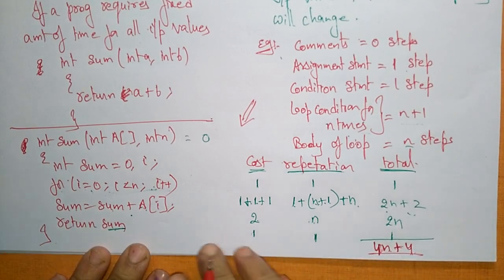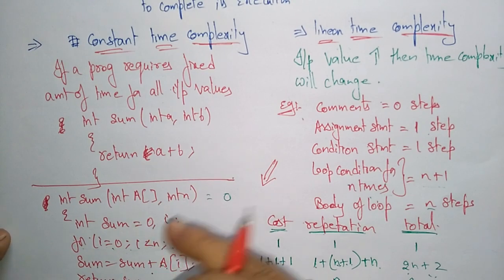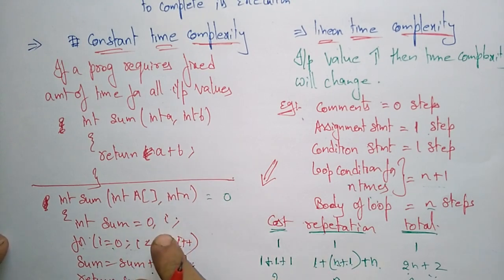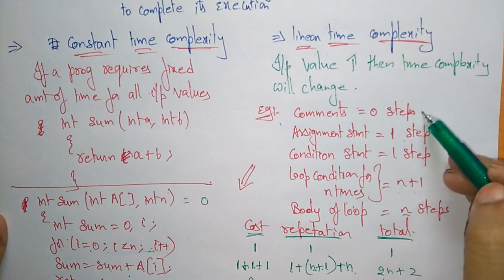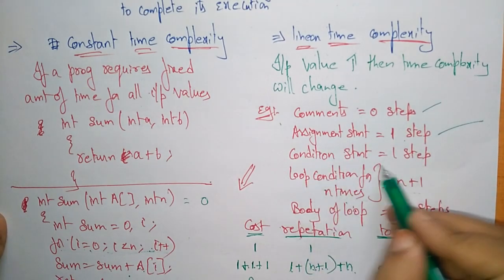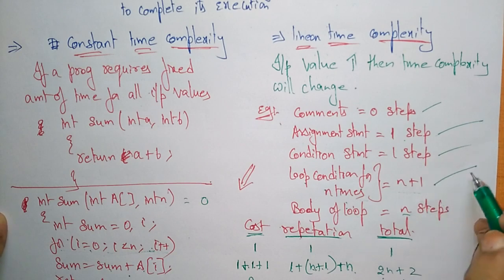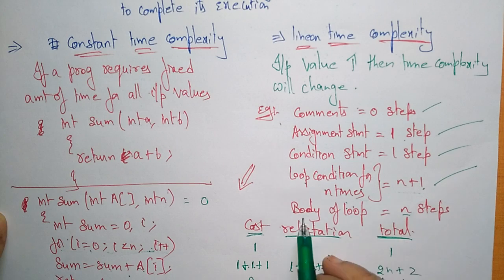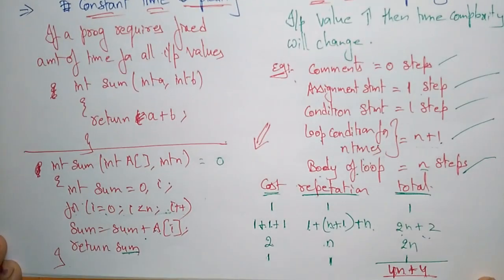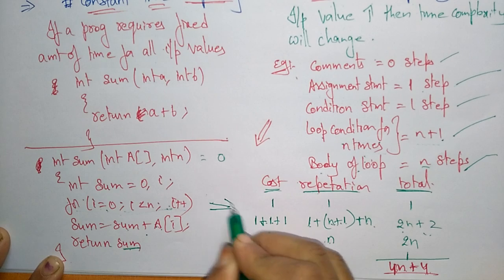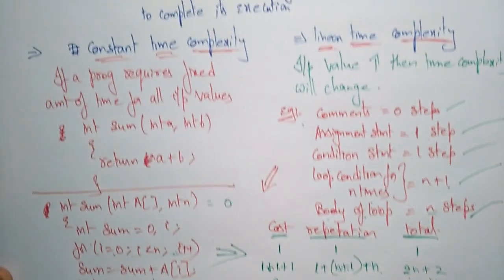This is how you calculate the time complexity for any given program or algorithm. To summarize the steps: comments take 0, assignment statements take 1, condition statements take 1, loop conditions for n times take n plus 1 steps, and the body of the loop takes n steps. This is the linear time complexity. Thank you.